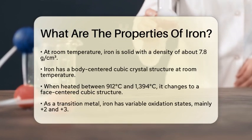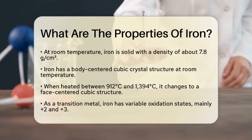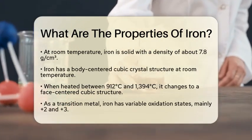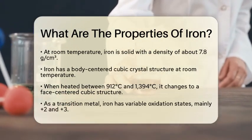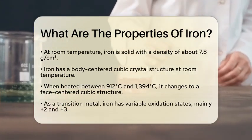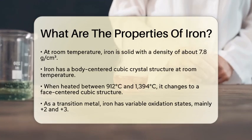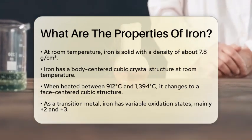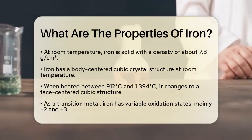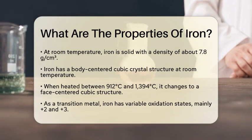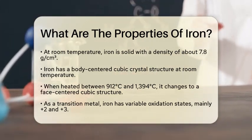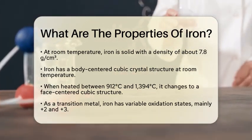The structure of iron at room temperature is a body-centered cubic crystal structure. However, when heated between 912 degrees Celsius and 1,394 degrees Celsius, it changes to a face-centered cubic structure.